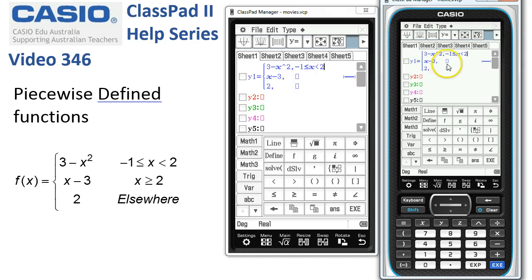And the next one picks up from 2 or more, so in this case x has to be greater than or equal to 2. And we'll leave the last one blank for elsewhere.